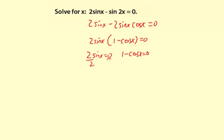Divide by 2, so I'm going to get sine of x equals 0. And this one, I'm actually going to add cosine of x to both sides, so you're going to get 1 equals cosine of x.